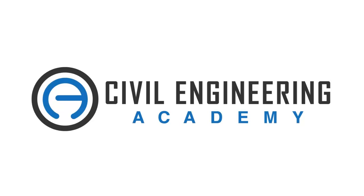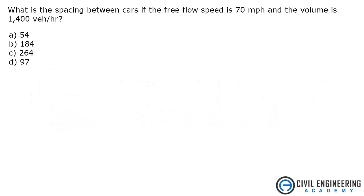Civil Engineering Academy. Hey what's up everybody, welcome to Civil Engineering Academy. Today we are solving a problem from transportation. The problem states: what is the spacing between cars if the free flow speed is 70 miles per hour and the volume is 1400 vehicles per hour?